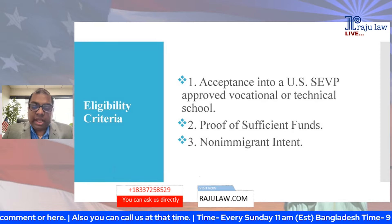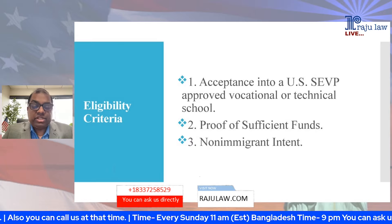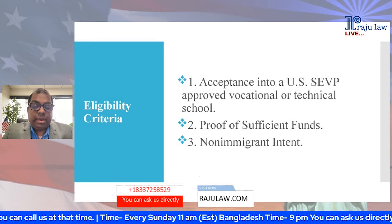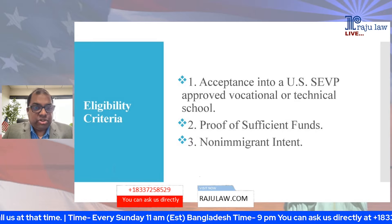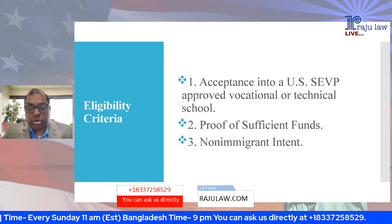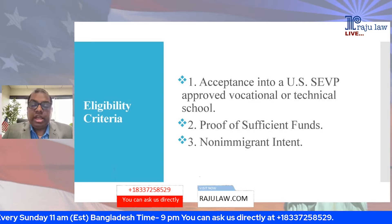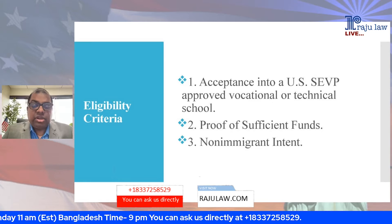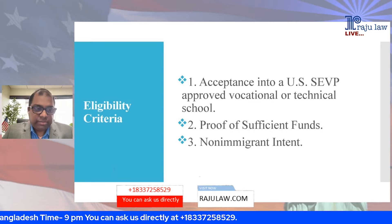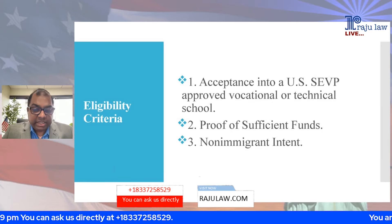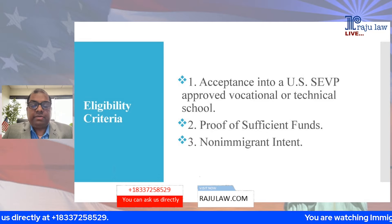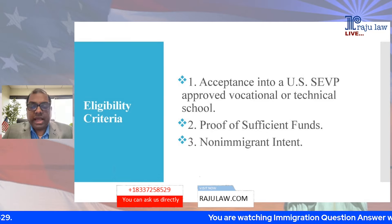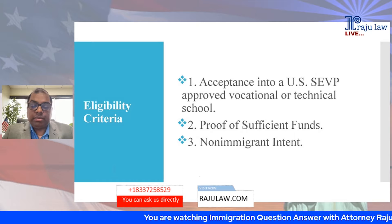Number three: non-immigrant intent. When they ask you questions about your future plans at the embassy, you must say that you will go back to your home country and work there. Never express intent to stay in America after your education — that is considered immigrant intent and may result in your visa being denied. This is a non-immigrant visa and you must demonstrate non-immigrant intent.